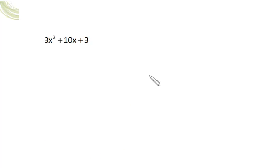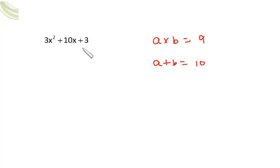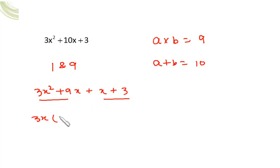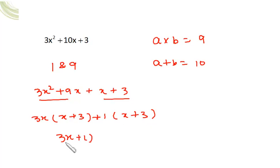For 3x²+10x+3: a×b must be 3×3=9 and a+b must be 10. Since both middle term and constant are positive, both numbers are positive. Choosing 1 and 9: 1×9=9 and 1+9=10. Rewrite as 3x²+9x+x+3, giving 3x(x+3)+1(x+3), which factors as (3x+1)(x+3).